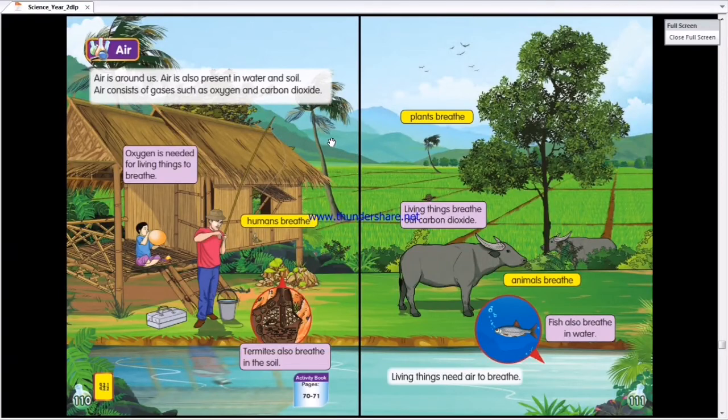And we use air. It is needed for living things. For human to breathe. For animal to breathe. And for plants to breathe. And it's also present in soil and water. Dalam air, dalam tanah pun ada udara.